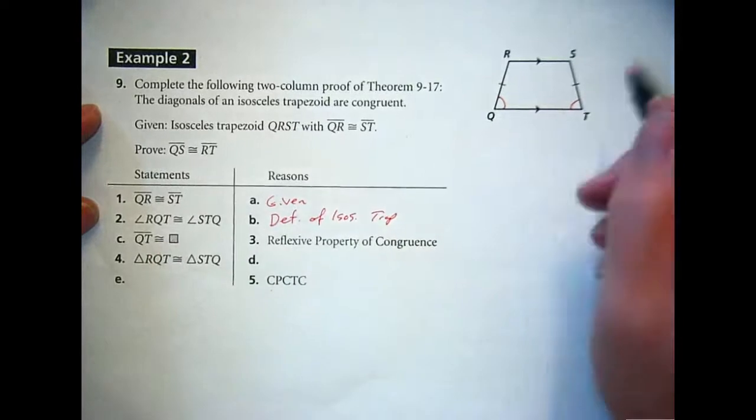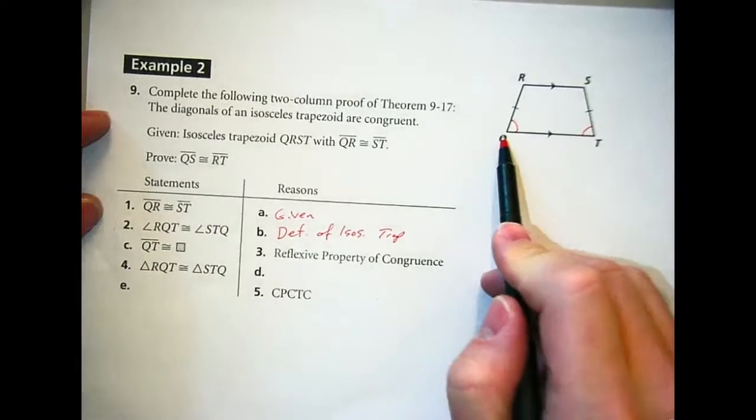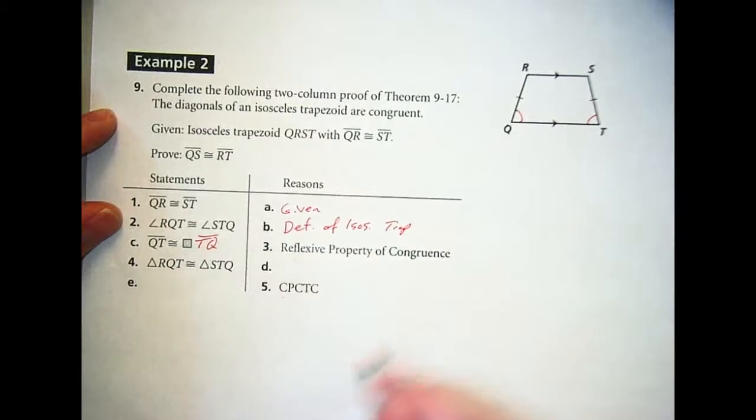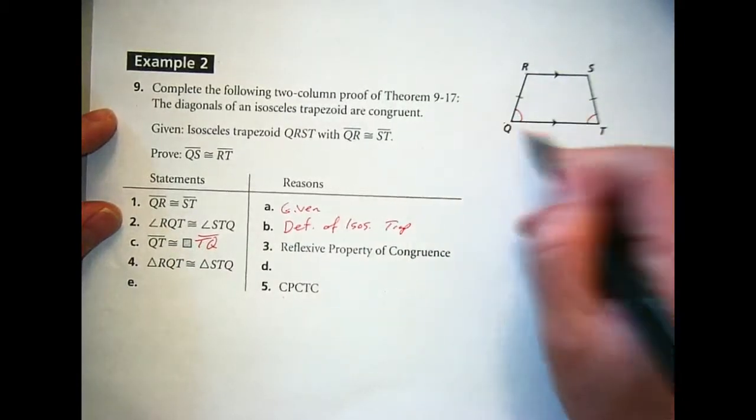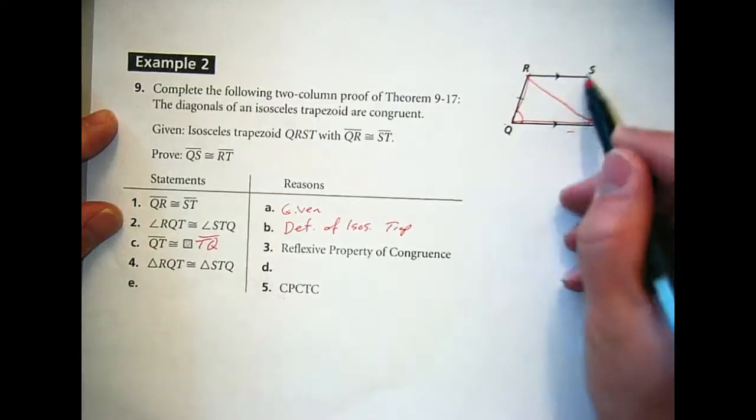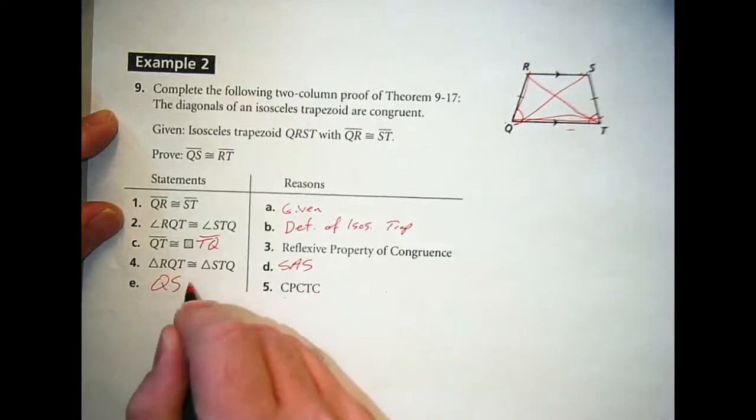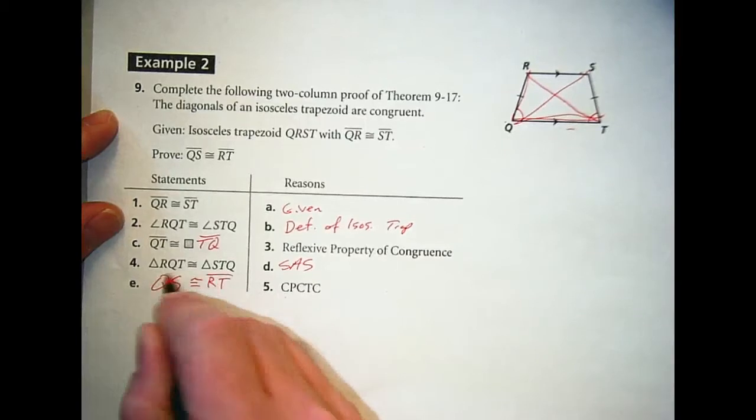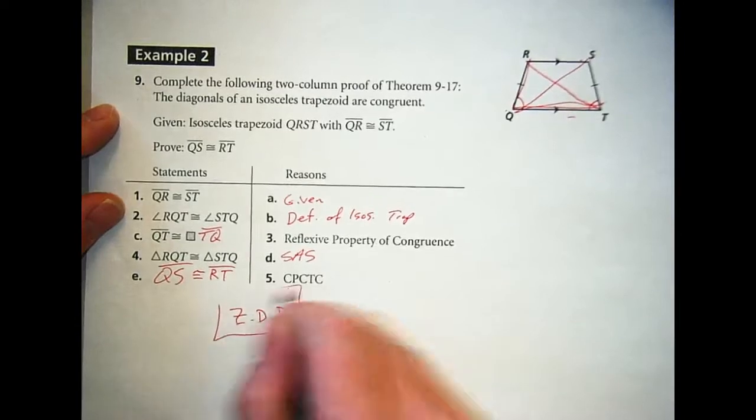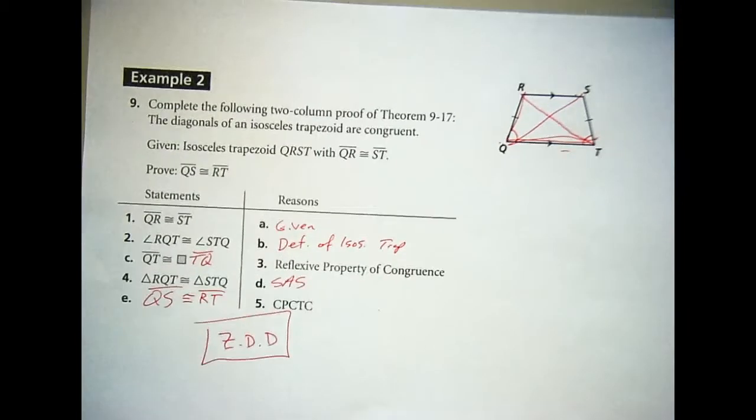QT is congruent to TQ by reflexive property of congruence. Which then tells us that triangle RQT is congruent to triangle STQ by SAS. QS is congruent to RT. Hey, that's right. CPCTC. What was that? Any questions? How many got it?